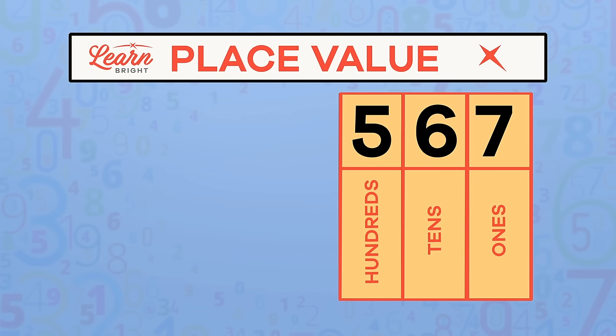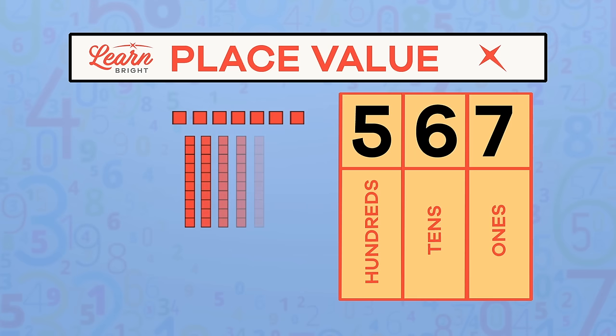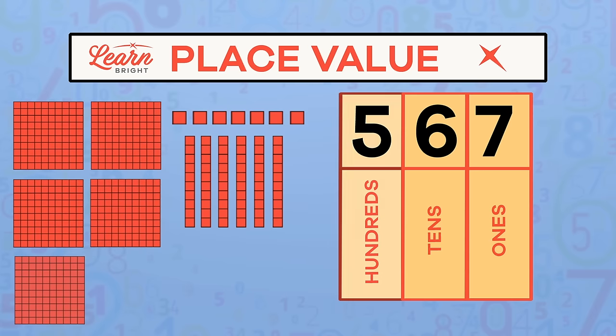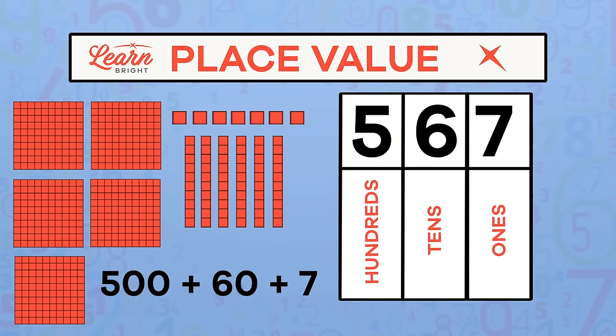This number has the place values in the hundreds, tens, and ones. There are seven ones, which equals 7, six tens or 60, and five hundreds or 500. You can also think of this number as 500 plus 60 plus 7, or 567.